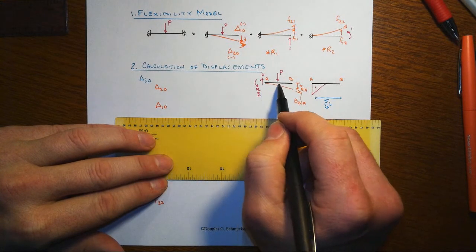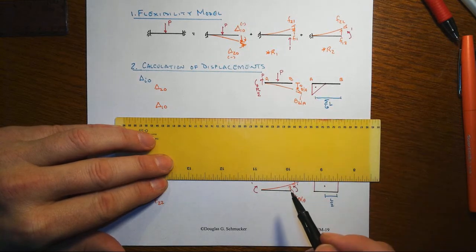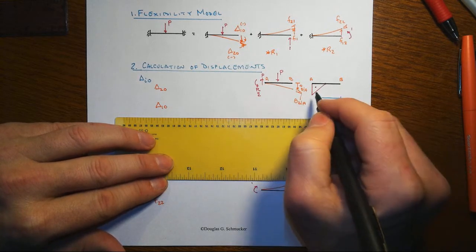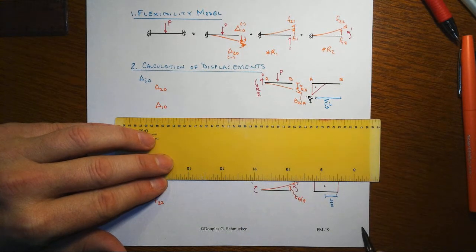Here's our structure, its displaced shape, and then the moment diagram that results out of that. We'll end up with a negative moment here at the left end, at the fixed end of negative PL over 2.